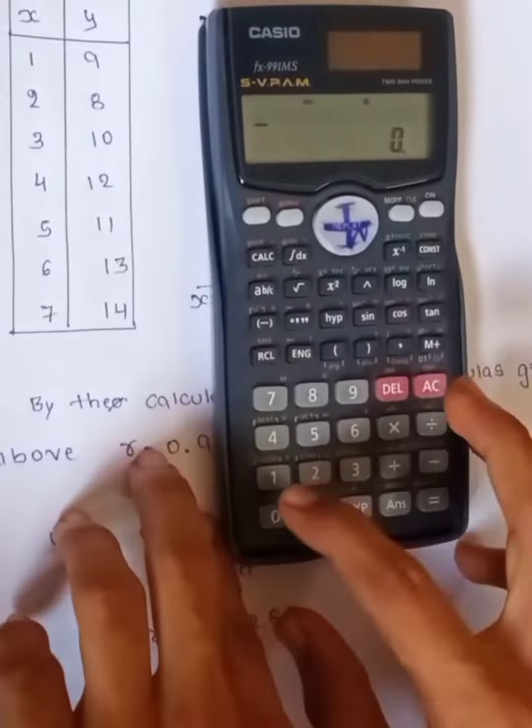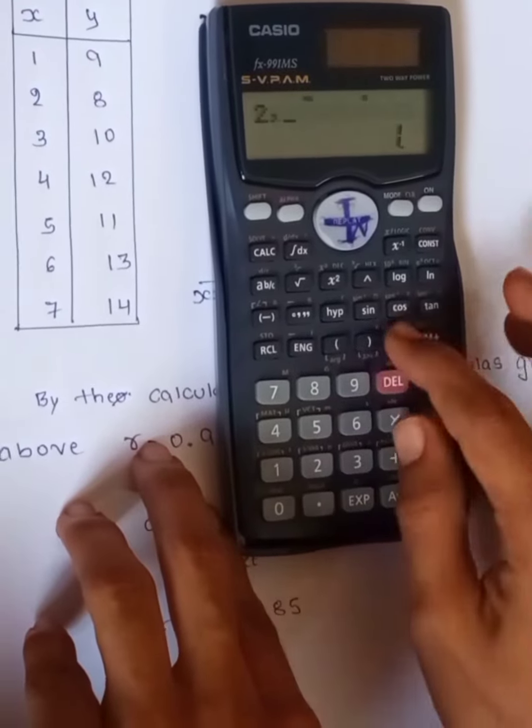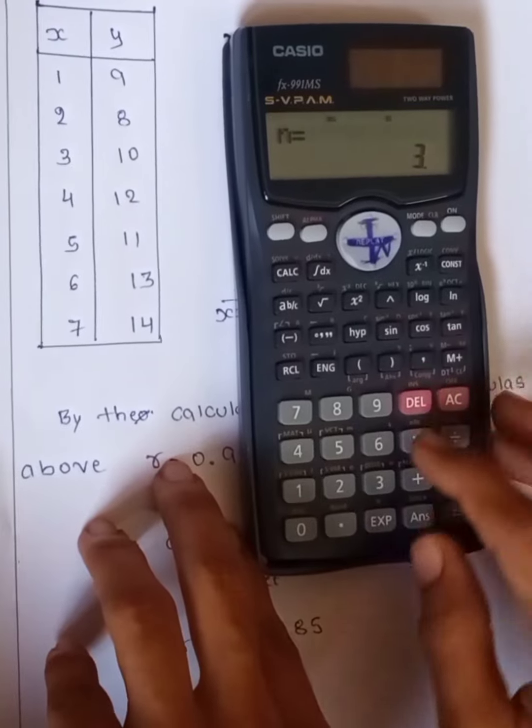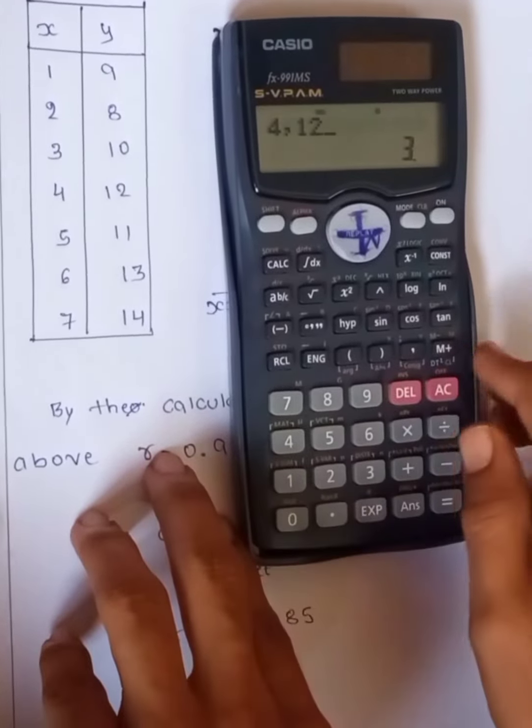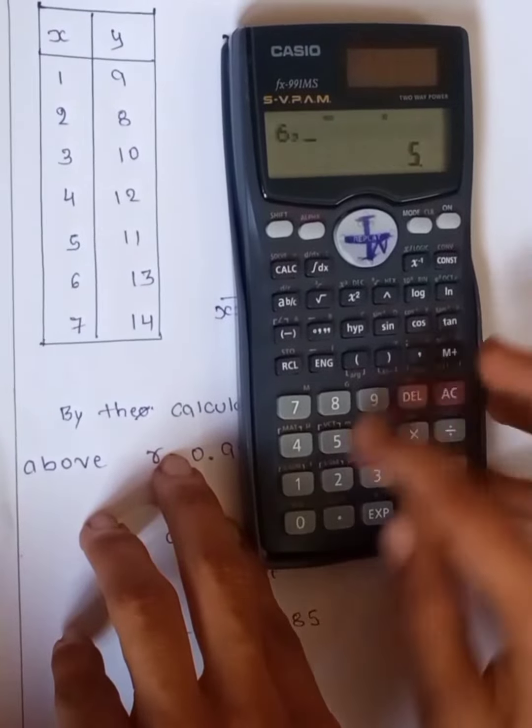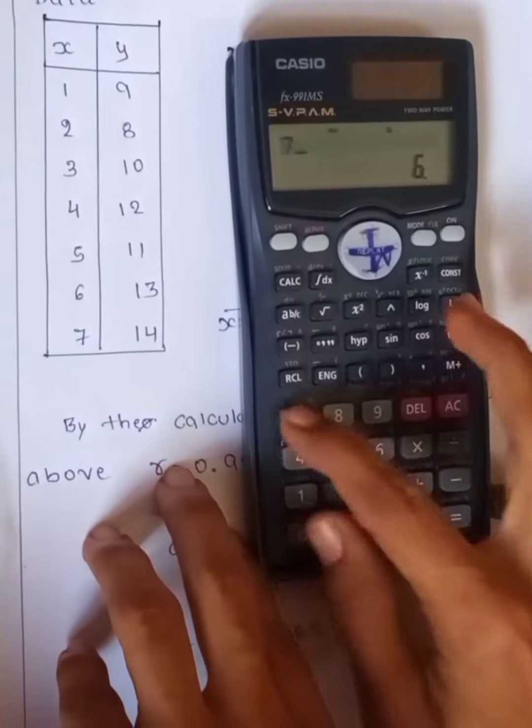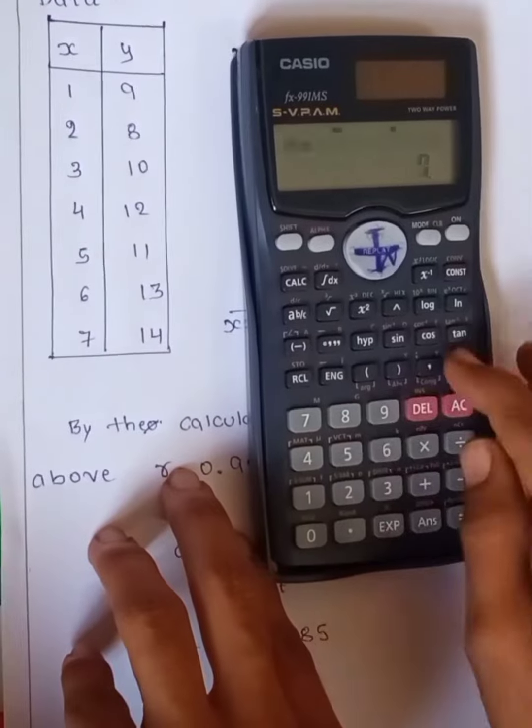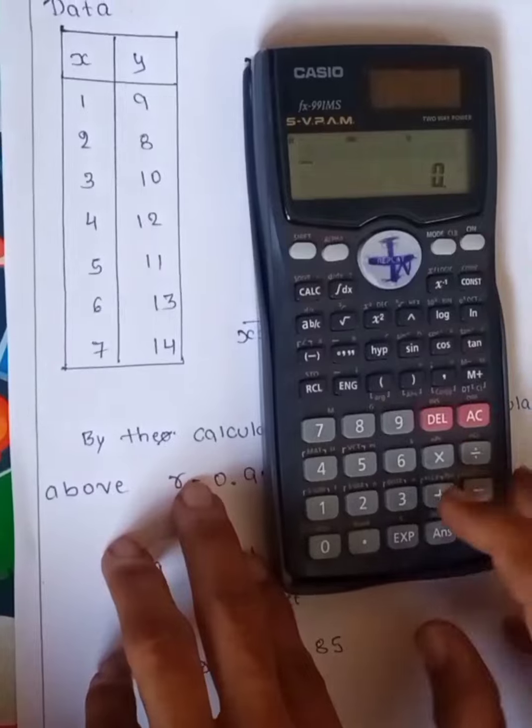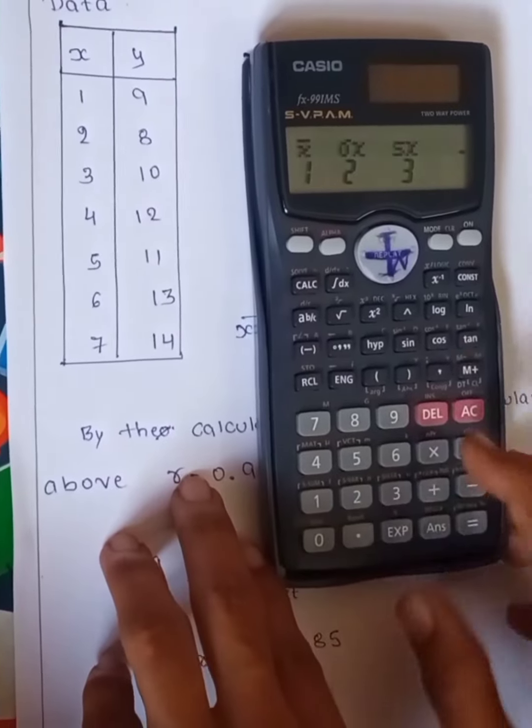That is: 1,9; 2,8; 3,10; 4,12; 5,11; 6,13; 7,14. Then select the shift button, select the second number, and press the right button.